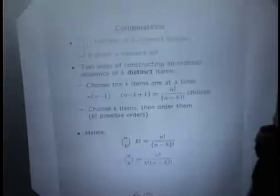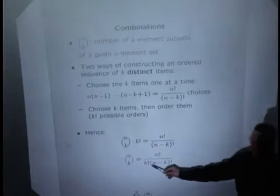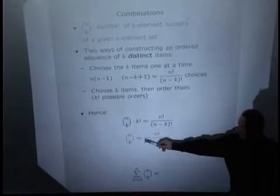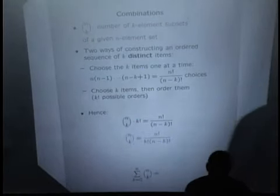And now that we have this relation, we can send the k factorial to the denominator, and that tells us what that number n choose k is going to be.